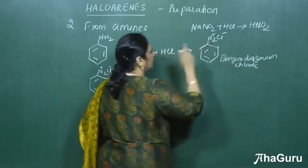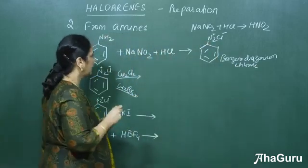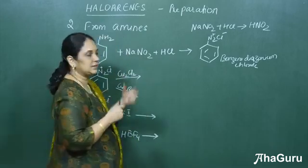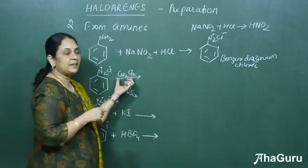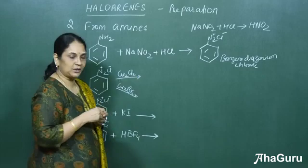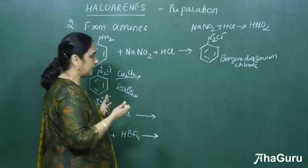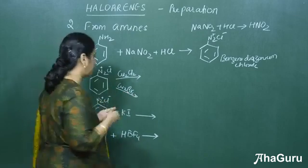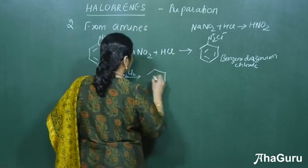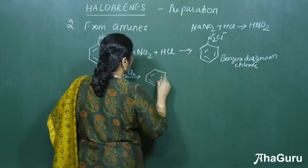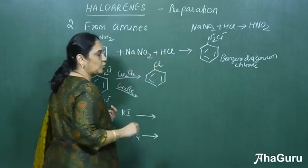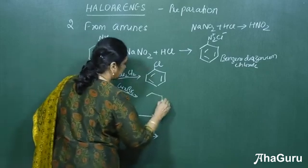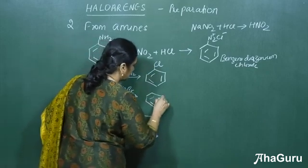The azo group is from N double bond N here. Once we prepare the benzene diazonium chloride using this reagent, when we treat it with Cu2Cl2 which is dissolved in HCl, or if we treat it with Cu2Br2 dissolved in HBr, we will get the chlorine substituted benzene, that is chlorobenzene here. If we use Cu2Br2, we will get the bromine substituted benzene.